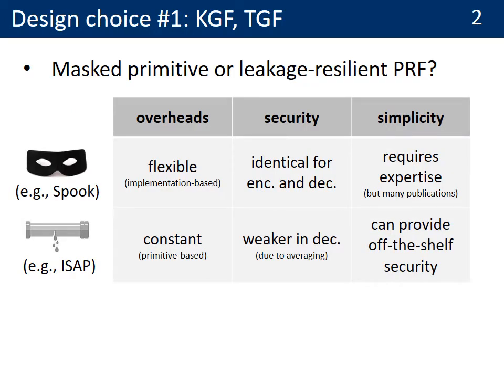This choice of security targets leads to a first design question: how to instantiate the key generation function and tag generation function. Looking at the literature, there are mainly two options: using a masked primitive or a leakage-resilient NPRF. In terms of implementation overheads, the masked primitive has the advantage of being more flexible, since the overheads are at the implementation level. By contrast, the overheads of a leakage-resilient NPRF are at the primitive level and therefore always there. In terms of security, the main difference is that a masked primitive is equally hard to attack in encryption and decryption, while a leakage-resilient NPRF is easier to attack in decryption, where you can average the noise of the leakage measurements.